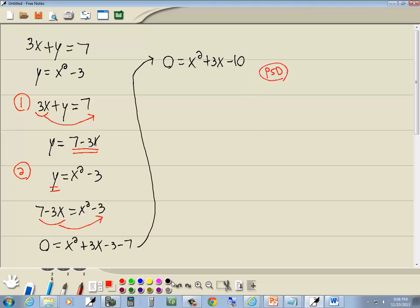This factors using the PST method. Because we have x squared, no number in front of our x squared. So this factors as x plus 5 times x minus 2.